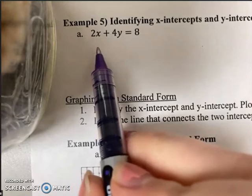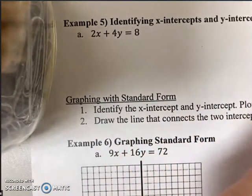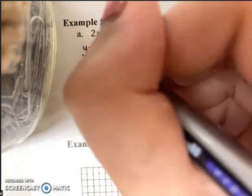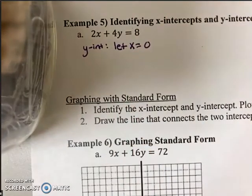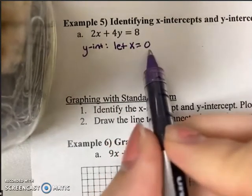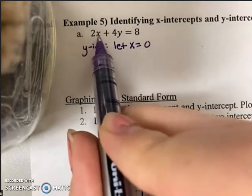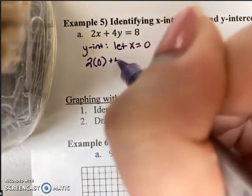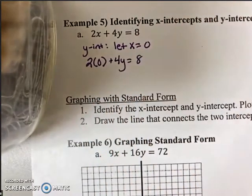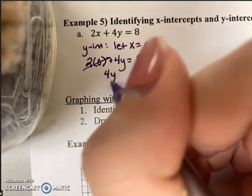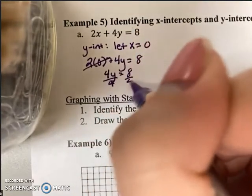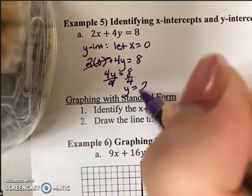When we're taking a look at standard form, you actually have to identify the x-intercepts and y-intercepts. Let's start off finding the y-intercept. In order to find the y-intercept, we'd have to solve for y. Essentially, we'd have to let x equal 0. If I let x equal 0, I'm going to go ahead and substitute in my 0 for x, giving me 2 times 0 plus 4y equals 8. Well, 2 times 0 is just 0, so that's gone. And now I just have 4y equals 8. To get y by itself, we divide each side by 4, giving me y equals 2.